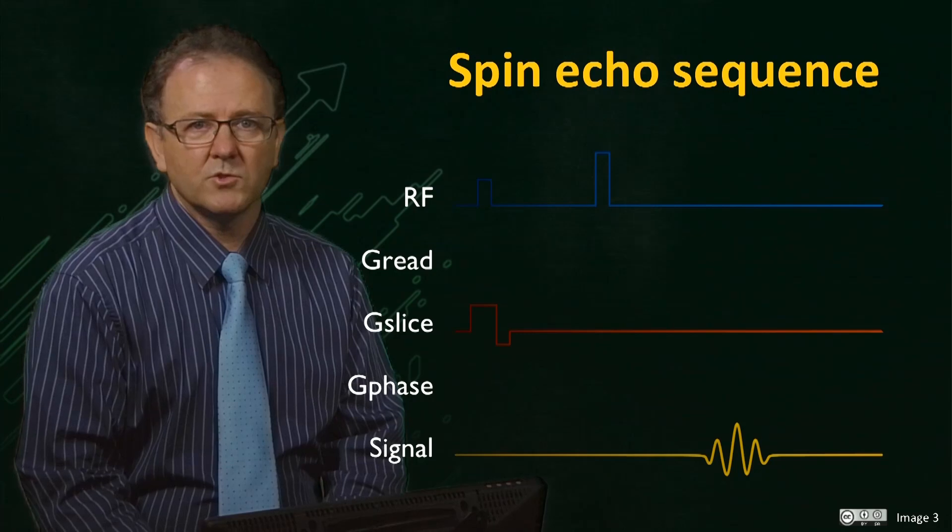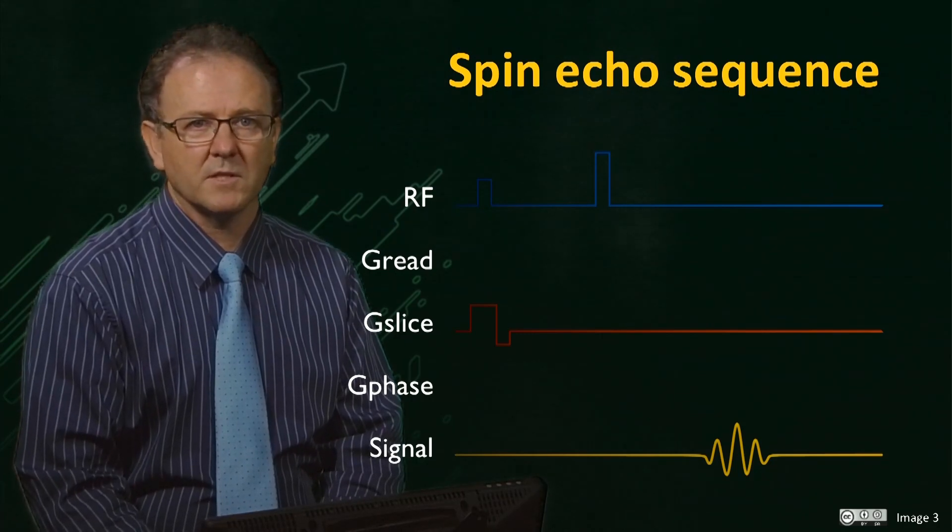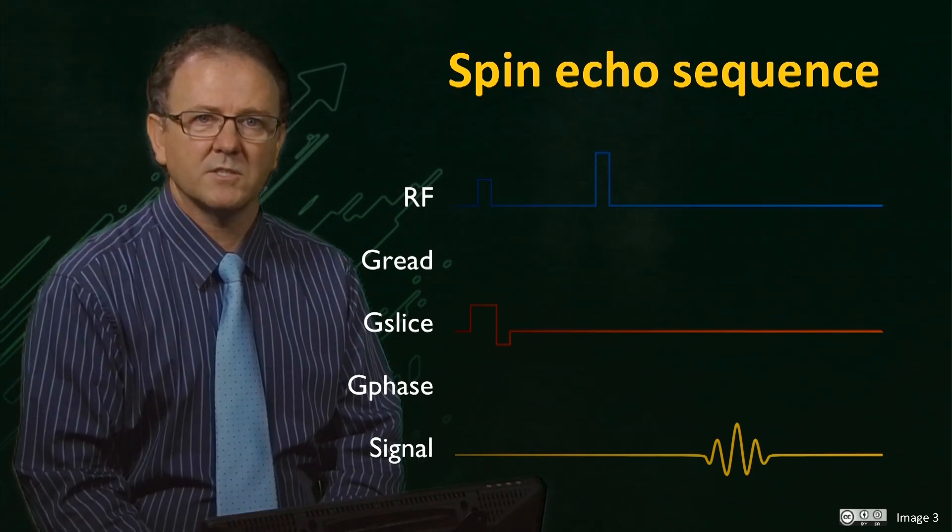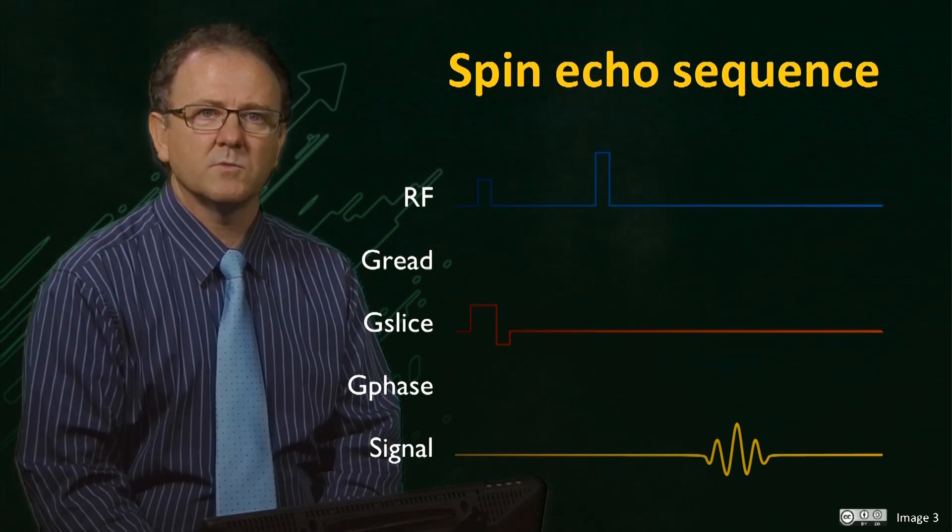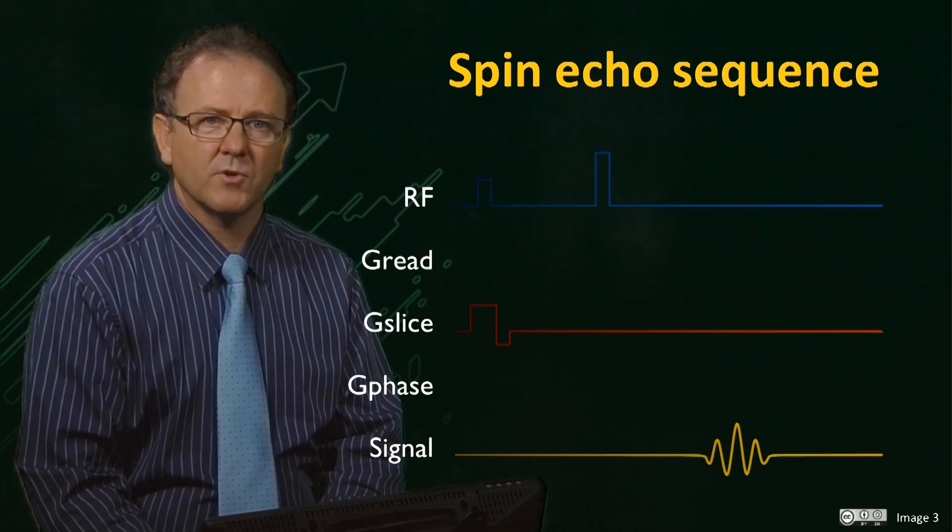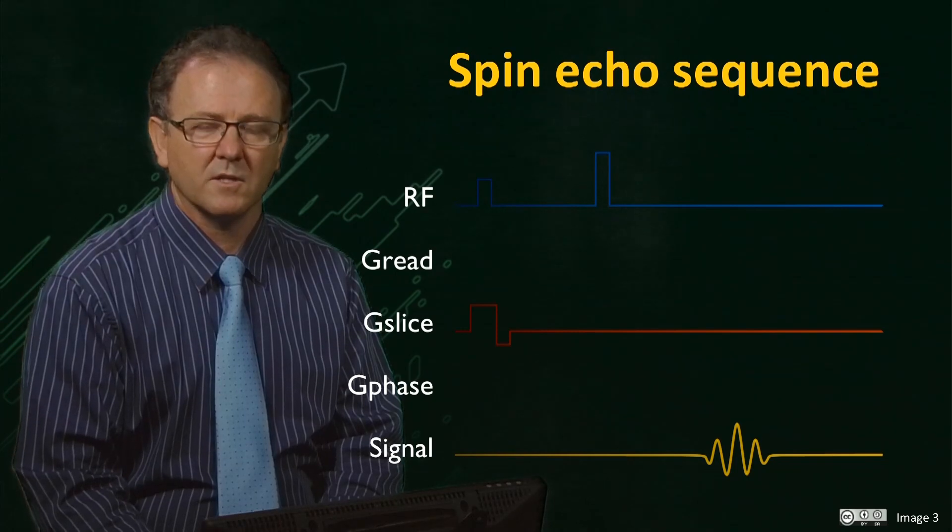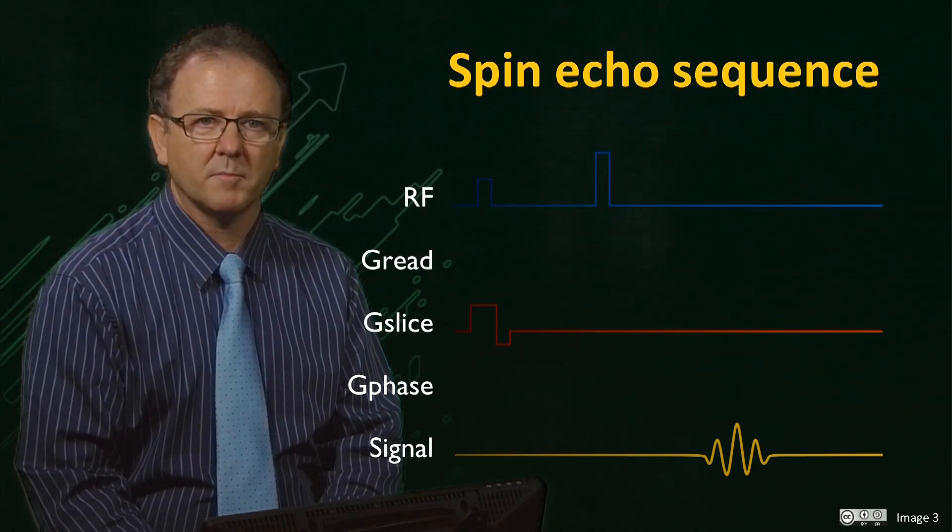We have not shown it here, but usually the 180 degree refocusing pulse is applied as a slice selective pulse, that is, with the slice gradient turned on such that only the transverse magnetisation within the slice is acted upon by the pulse.